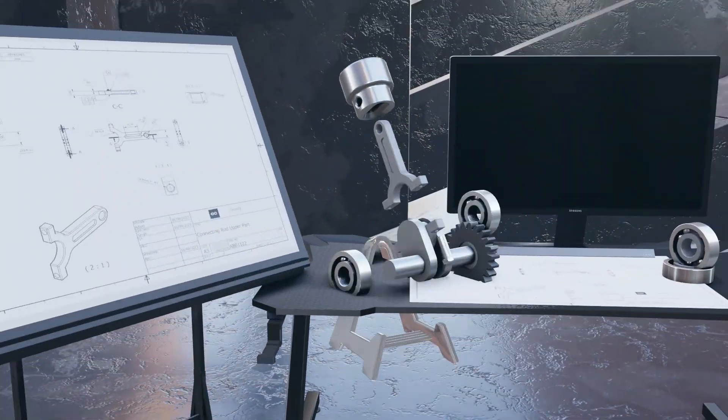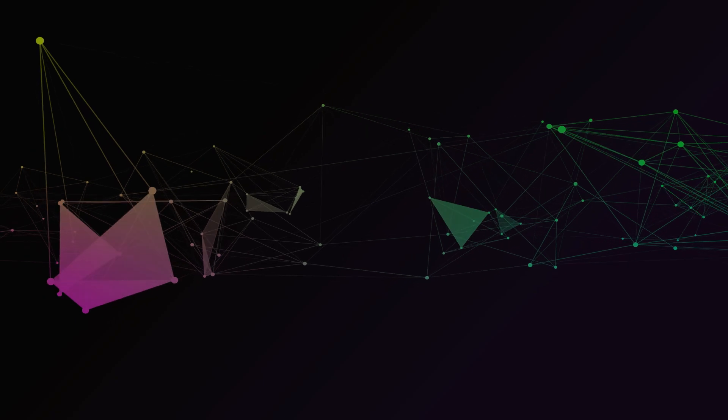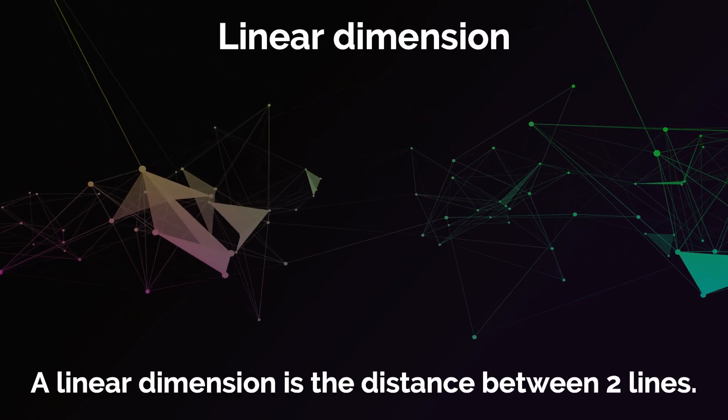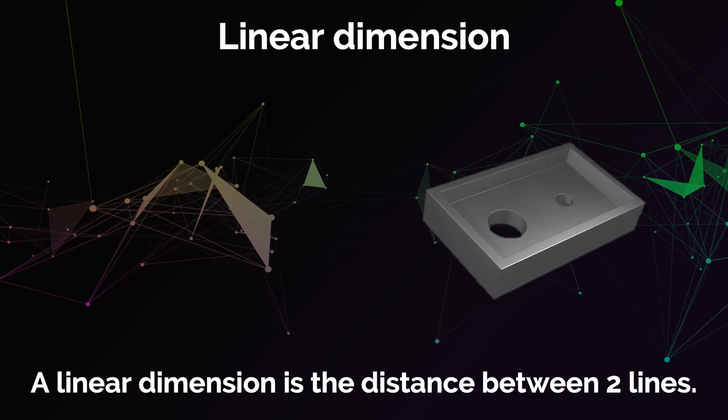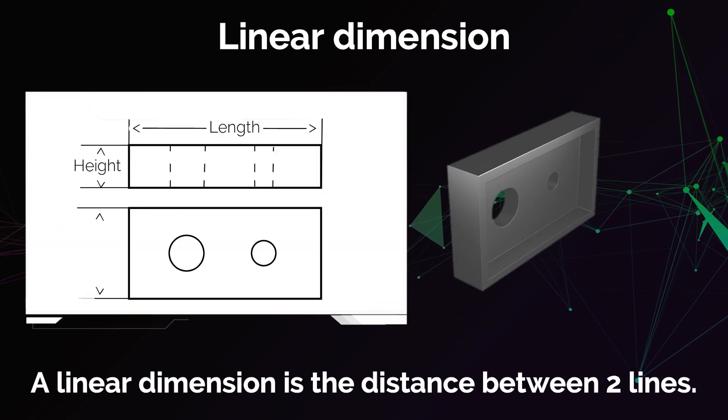With that being said, let's now look at the different types of dimensions. One of the most common types of dimensions is linear dimension. A linear dimension is the distance between two lines. These two lines can be the edges of the part, for example, to describe the height, width, or length of the part.